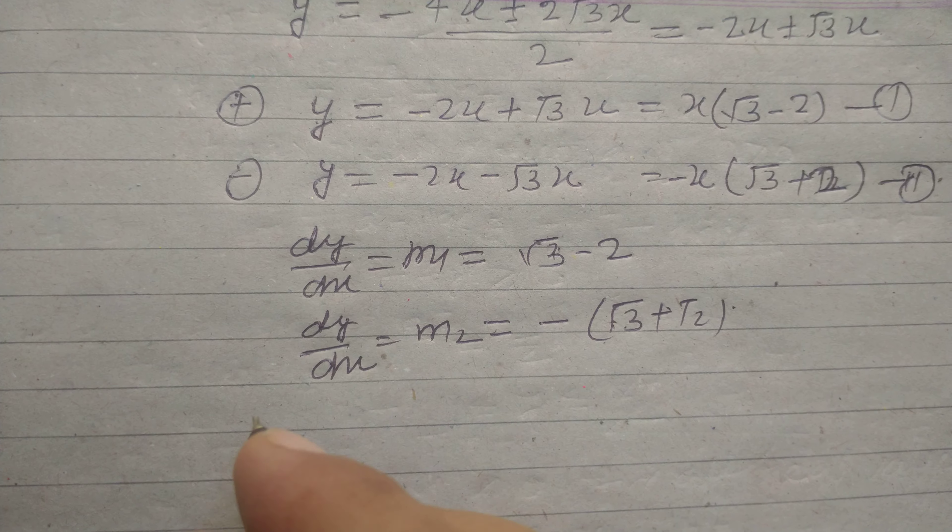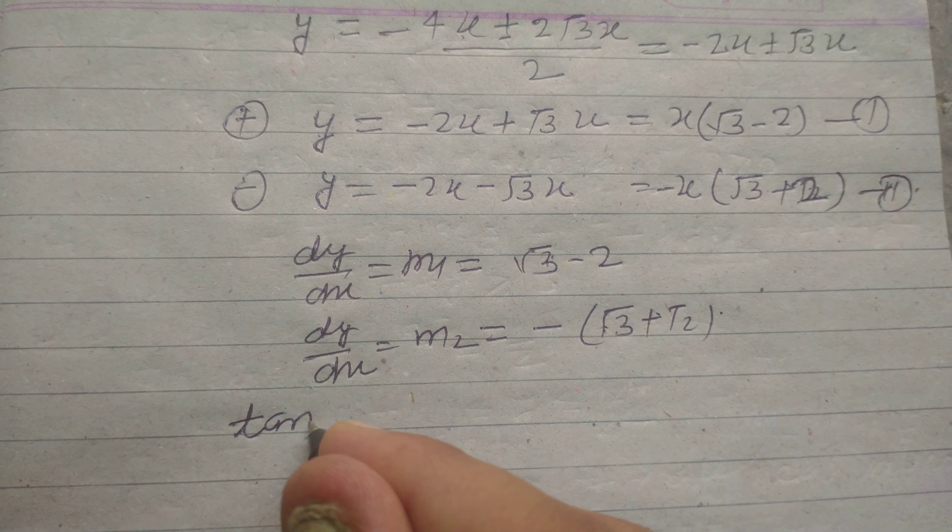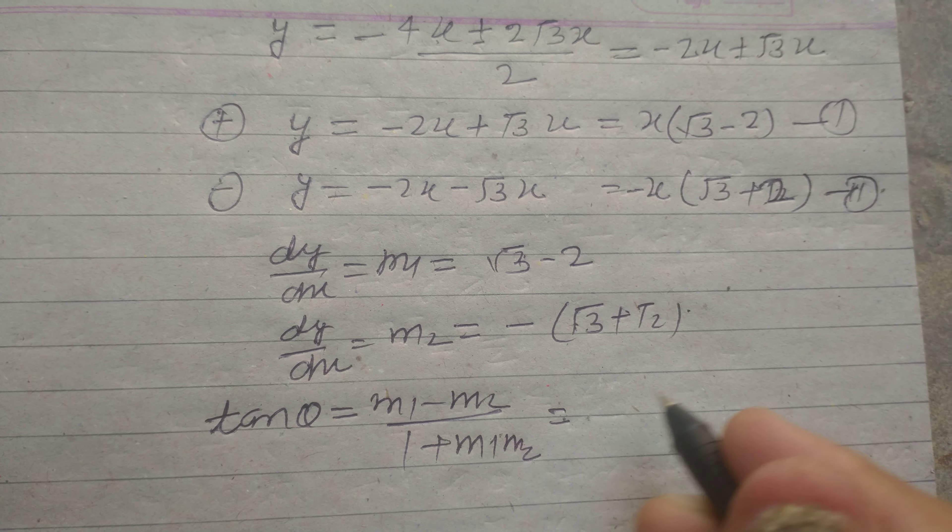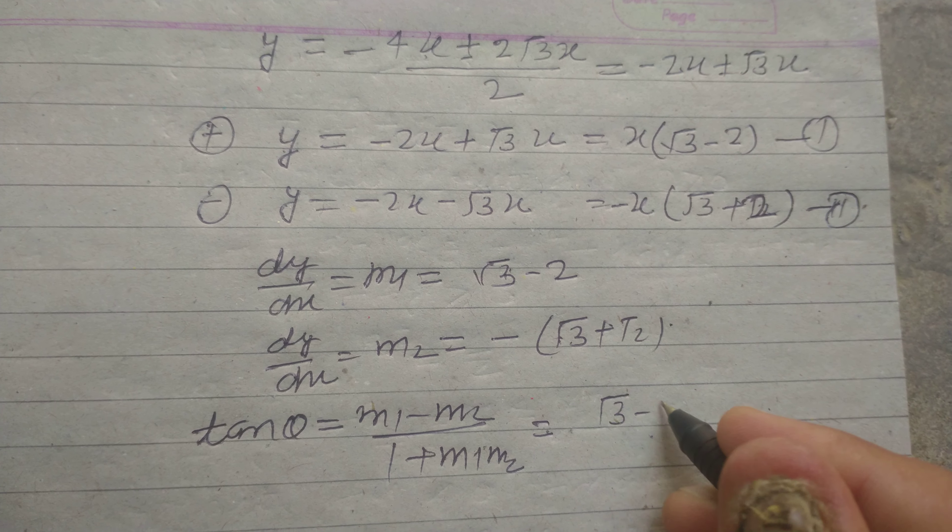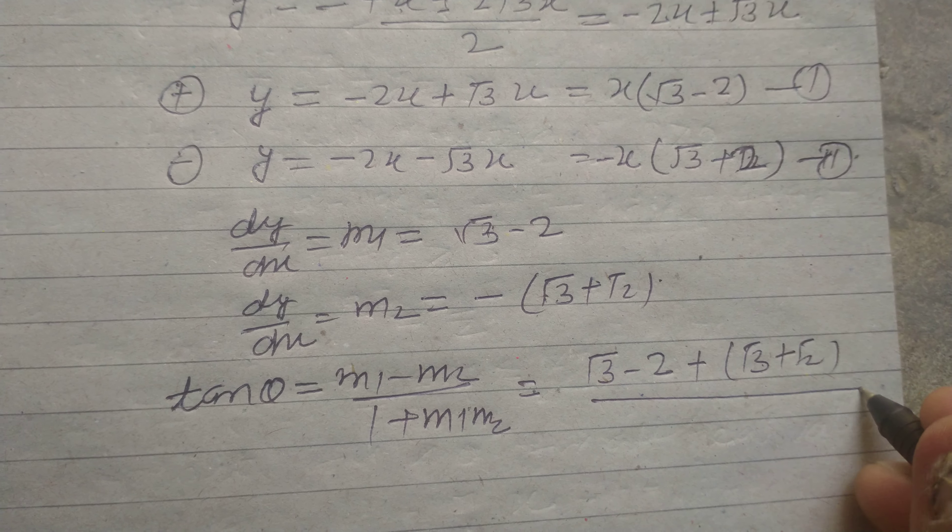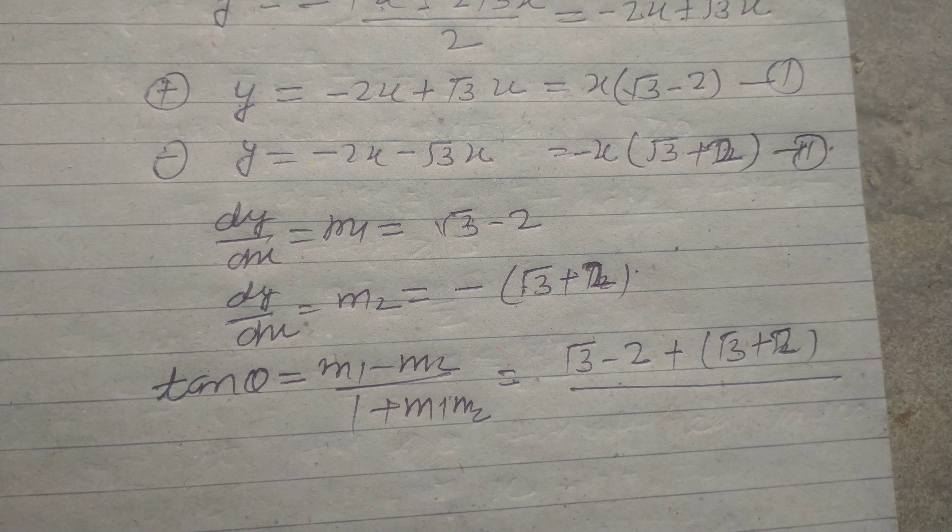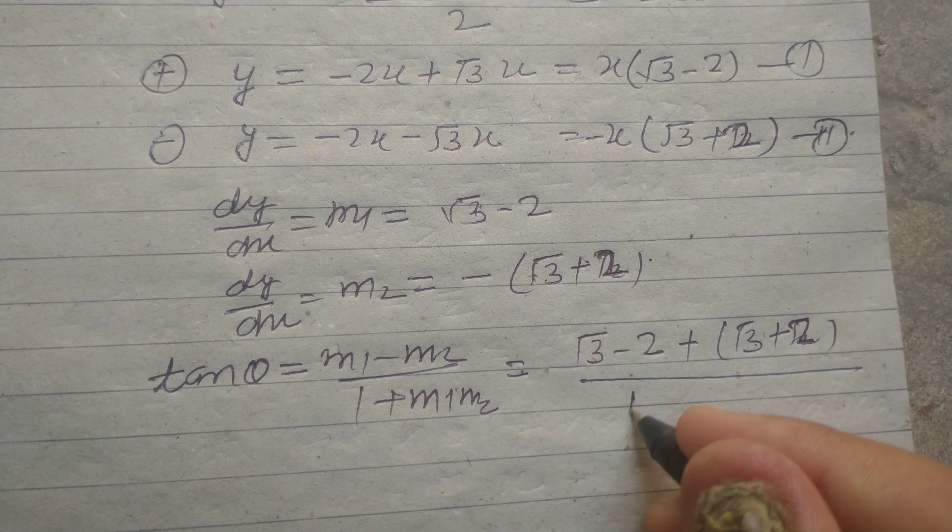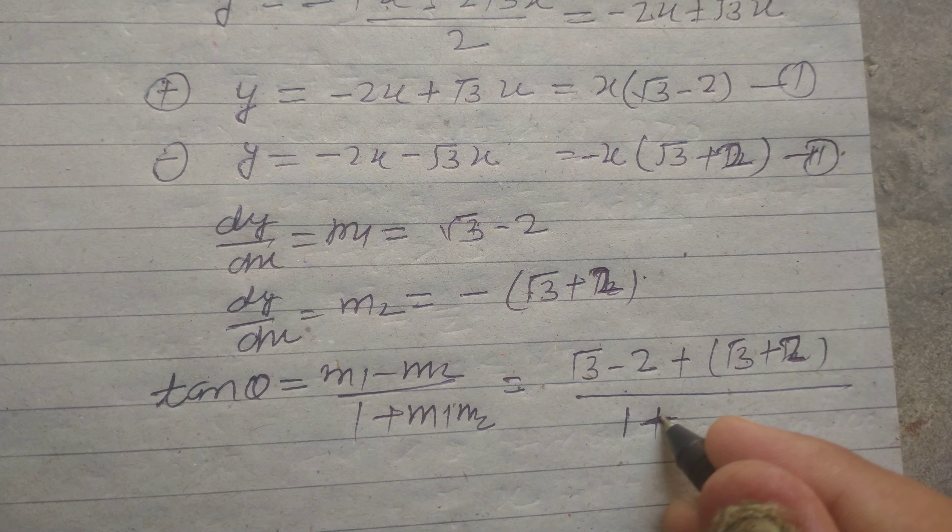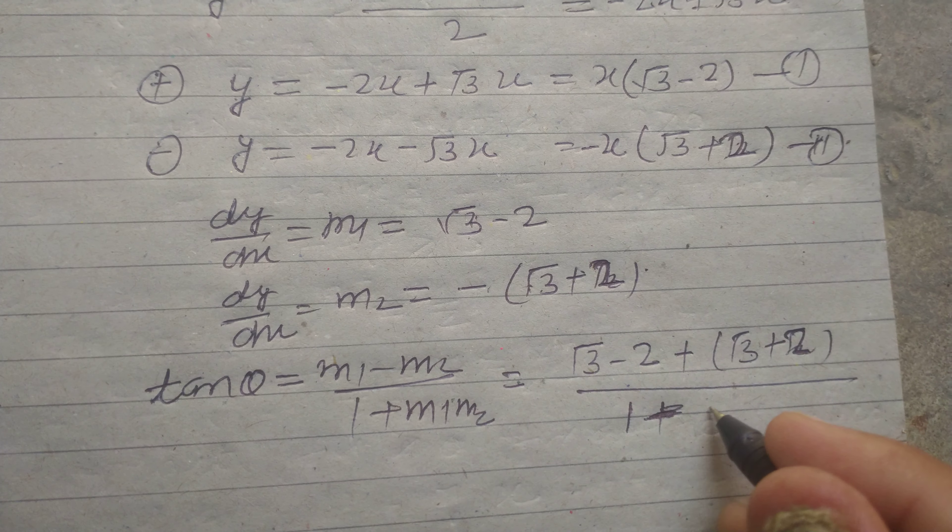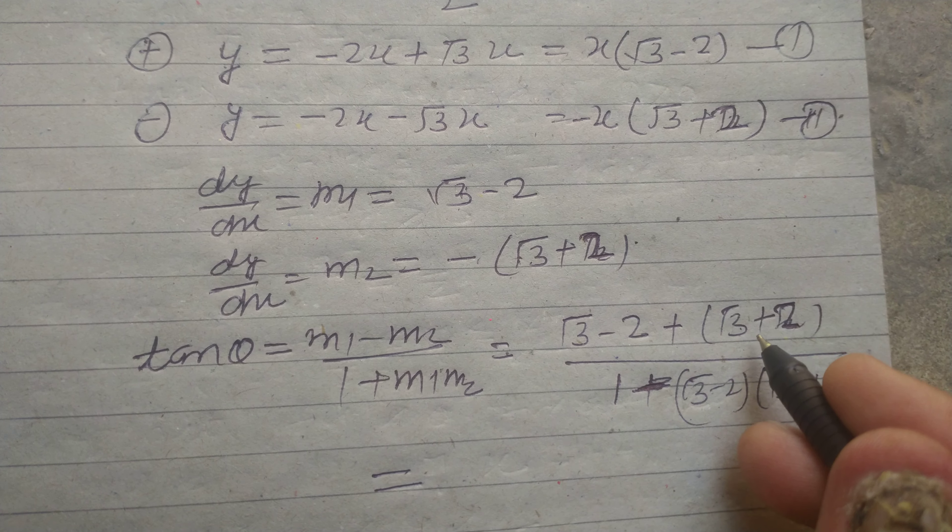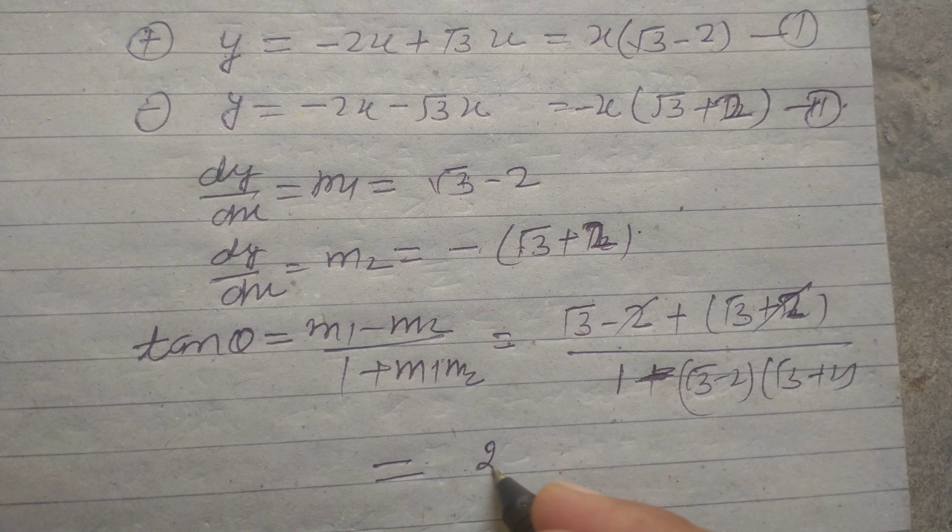Now angle between lines: tan θ = (m₁ - m₂)/(1 + m₁m₂). So m₁ is √3 - 2 minus (-(√3 + 2)), which becomes √3 - 2 + √3 + 2. Upon 1 plus (√3 - 2)(√3 + 2). So this will be 2√3.